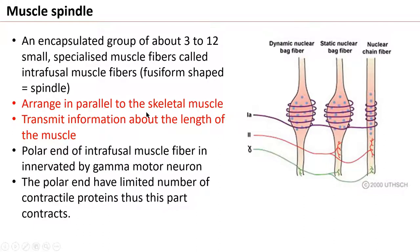The muscle spindle is arranged parallel to the skeletal muscle and transmits information about the length of the muscle. The polar ends of the intrafusal muscle fiber are innervated by the gamma motor neuron. The polar ends have a limited number of contractile protein, so this part contracts.